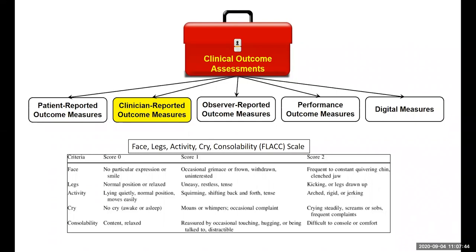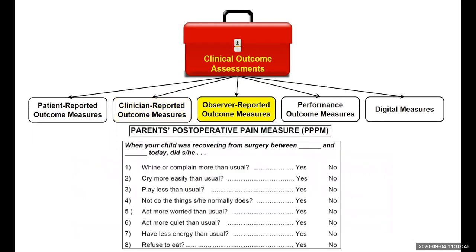If the information is not from clinicians, we might ask the parents or a caregiver to report on the patient's pain levels. These are called observer-reported outcome measures — an external person observing the patient's pain levels. Here's an example of the Parent's Post-Operative Pain Measure, which has a series of yes-no questions like: does the child whine or complain more than usual, cry more easily than usual, play less than usual, et cetera.